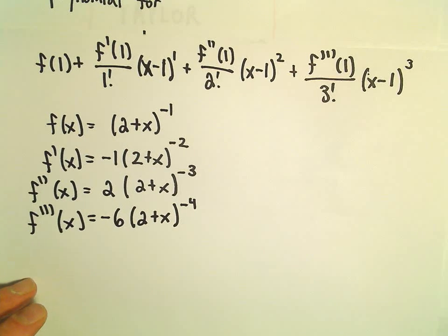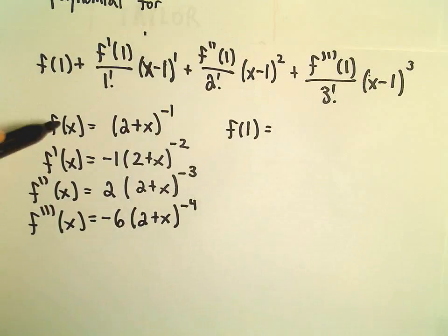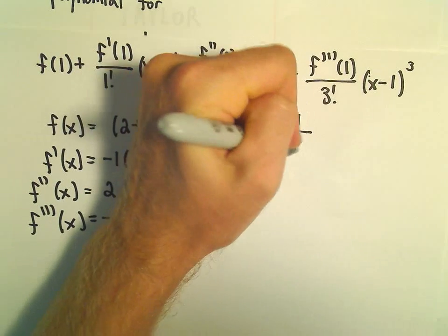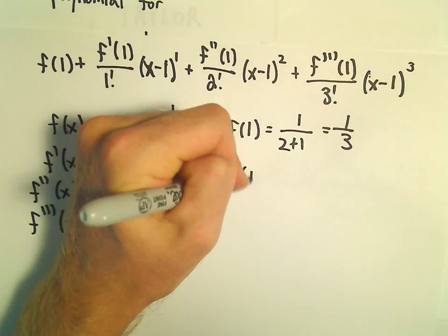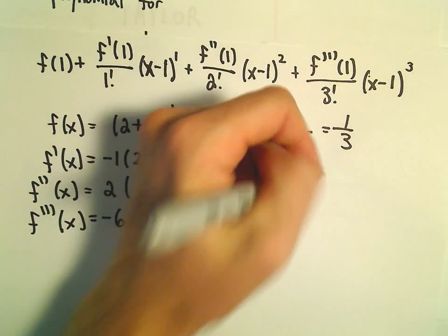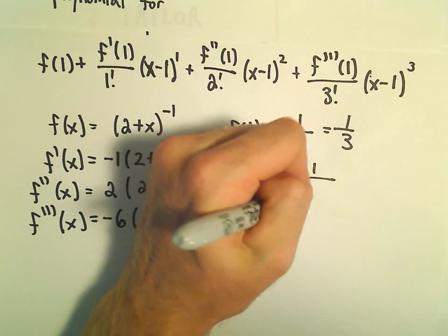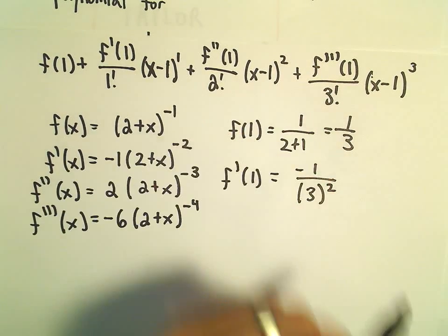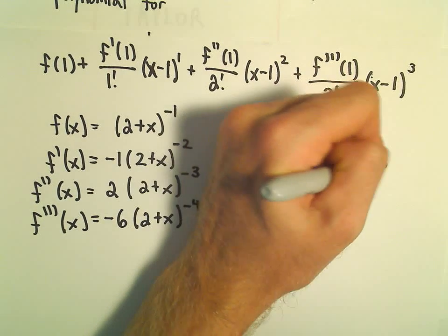Okay, so now I'm just going to start plugging in our values. So f of 1, that's just going to be 1 over 2 plus 1, or 1 third. f prime of 1 will get negative 1 over 2 plus 1, so it'll give us 3 to the second power when we move our exponent downstairs, so that's negative 1 ninth.